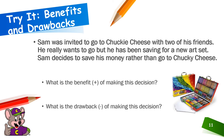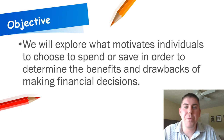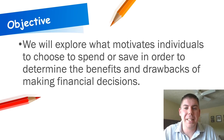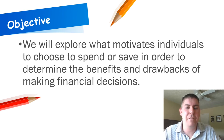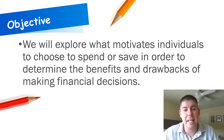Benefits and drawbacks are important things to consider when we make choices. As we get older the decisions we make will have many more consequences — benefits or drawbacks — like buying a house, getting a car, applying to a magnet middle school or high school, or choosing the right college. We always have to be mindful of the benefits and drawbacks of our decisions and the financial impacts they have on us. Today we looked at what would motivate individuals to choose to spend or save so we could determine the benefits and drawbacks of making financial decisions. We did a great job looking at needs and wants as they would motivate us to spend or save money. Have a great day and I look forward to seeing you next week.